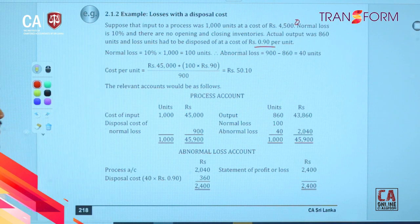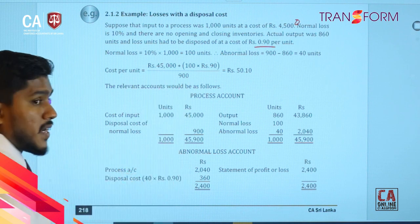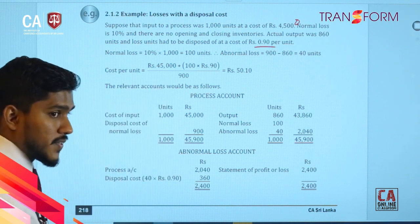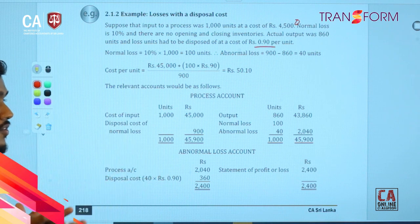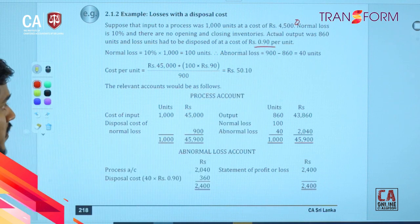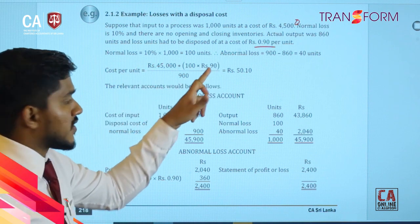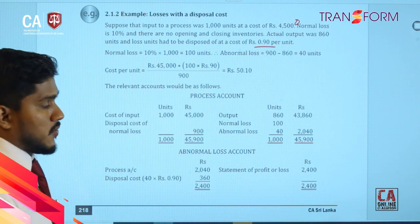When it comes to calculating cost per unit — previously when we had income from scrap, what we did was adjust that amount to the material cost by deducting it. Now what will happen is we need to adjust the disposal cost to the material cost as well, but this time you are going to add that disposal cost to the material cost instead of deducting it.